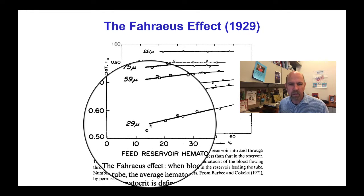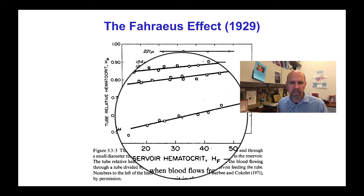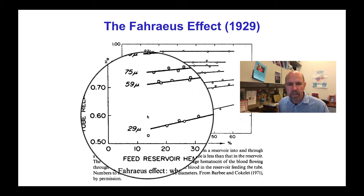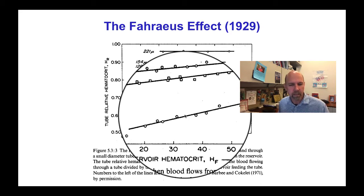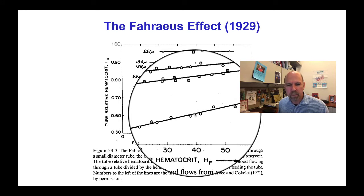In a 29-micron diameter tube, the tube hematocrit — the hematocrit you would measure by taking a snapshot of the flowing blood in the tube — varies somewhat with the feed reservoir hematocrit, but is somewhere around about 60%. So in other words, if the hematocrit in the reservoir was 40%, then the hematocrit of that same blood flowing through a 30-micron tube would only be about 24%.